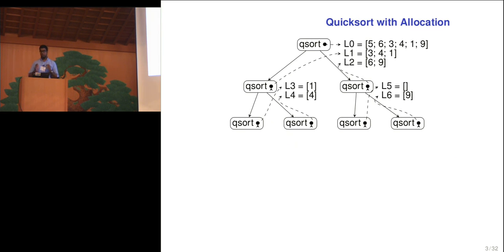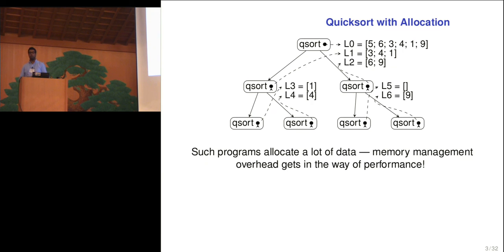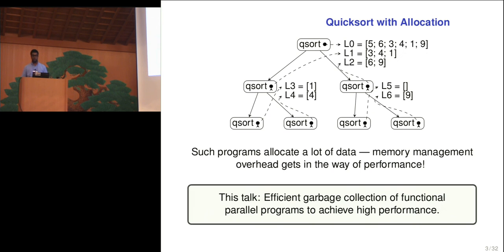But this talk is about memory management. So how would this call of Quicksort look in practice? Well, if we split it out into the memory allocations, the topmost call of Quicksort will allocate the initial vector. It will split up into the two subvectors that are passed on to the subcomputations, so on and so forth. And even in this tiny example, we've already created six allocations. That's a lot. And this is true for all of these kinds of programs and their implementations. They tend to allocate a lot of data. So while you can write your parallel program rather nicely, it's hard to get high performance because memory management gets in the way.